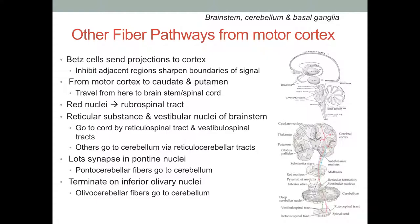There are also fibers from the motor cortex synapsing on the pontine nuclei — 'pontine' meaning it's in the pons. Nuclei is a group of cell bodies that do the same thing. It's a group of cells in the pons area, and then pontocerebellar fibers go to the cerebellum, traveling together to elicit local balance-type actions. Some fibers from the motor cortex go to the inferior olivary nuclei, and olivocerebellar fibers go to the cerebellum to help integrate sensory information with balance against gravity.